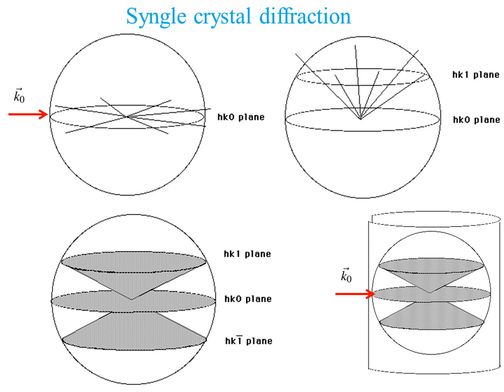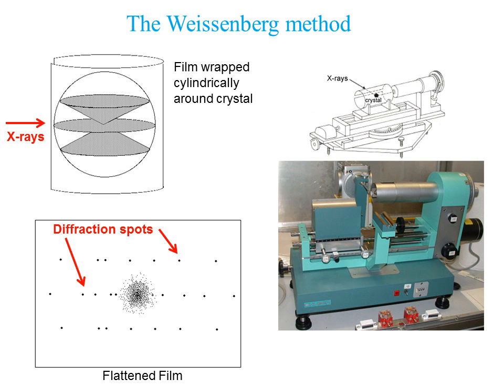We can place a detector — for instance, in the case of X-rays, an X-ray sensitive film wrapped cylindrically around the crystal placed at the center, with X-rays arriving through an aperture. When you open and flatten the film, you find the different points corresponding to two cones of diffraction and the central line for the HK0 plane, with a dark zone at the center where the incident beam is blocked. This is called the Weissenberg method.